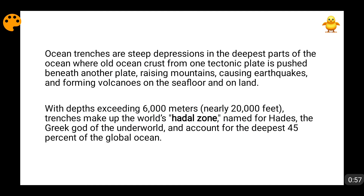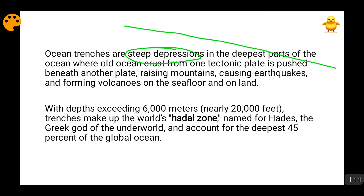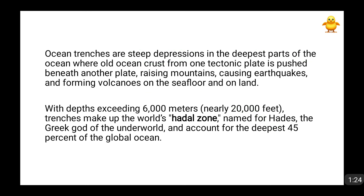Basically these oceanic trenches are steep depressions. There are two types: gradual depression and steep depression. When the slope gradually goes downwards, that is gradual depression. When the surface is flat and suddenly drops sharply, that becomes a steep depression. So these oceanic trenches are very steep depressions, something like a sudden sharp drop.